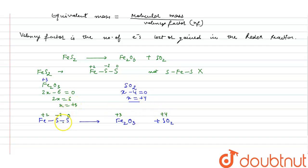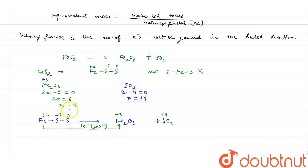Now we will see the change in oxidation states and the number of electrons lost or gained. Fe is converting from plus two to plus three, meaning Fe is oxidizing and has lost one electron. The sulfur with oxidation state minus two is converting to plus four, so it has also oxidized and lost six electrons.